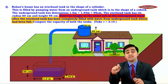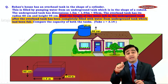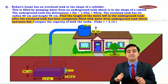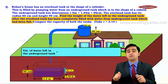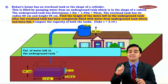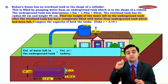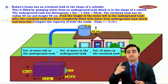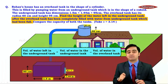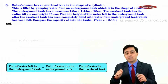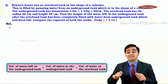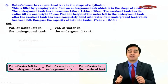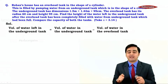We need to find the height of the water left in the underground tank. The volume of water left in the underground tank equals the volume of water in the underground tank minus the volume of water in the overhead tank.